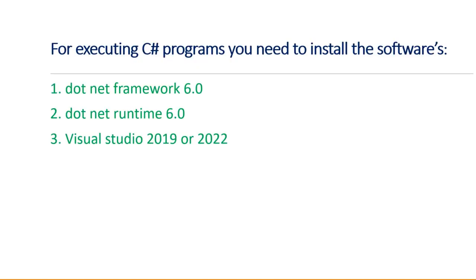For executing C-Sharp programs, you need to install the softwares: .NET Framework 6.0, .NET Runtime 6.0. Then you need to install Visual Studio 2019 or the updated version, 2022.